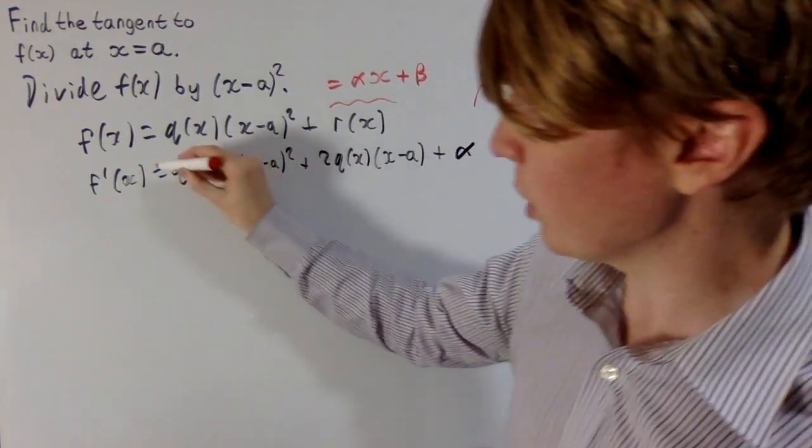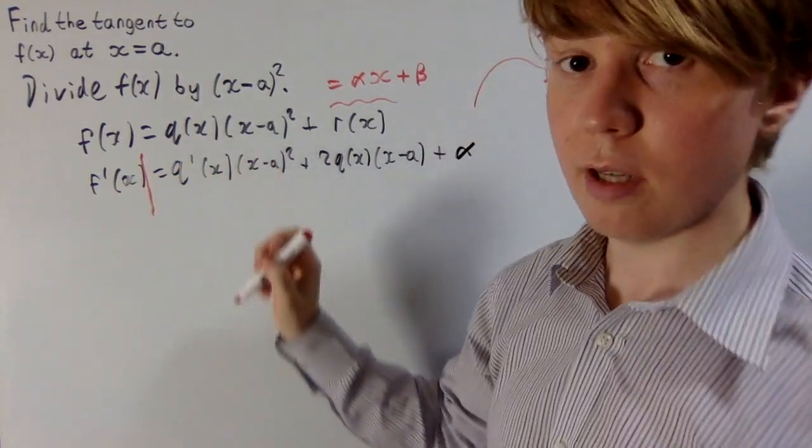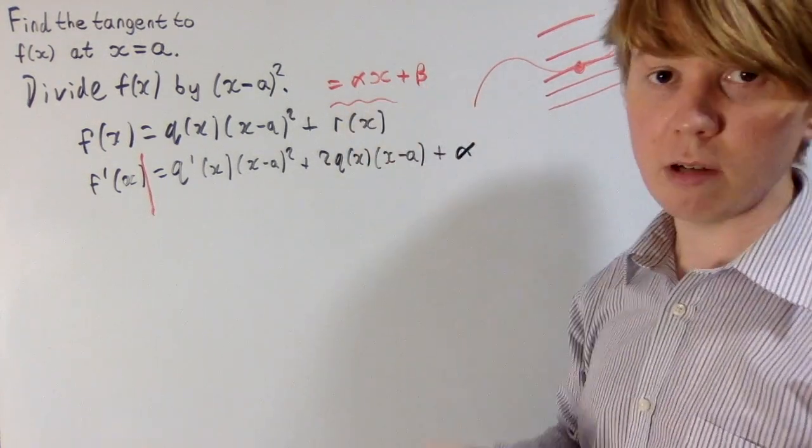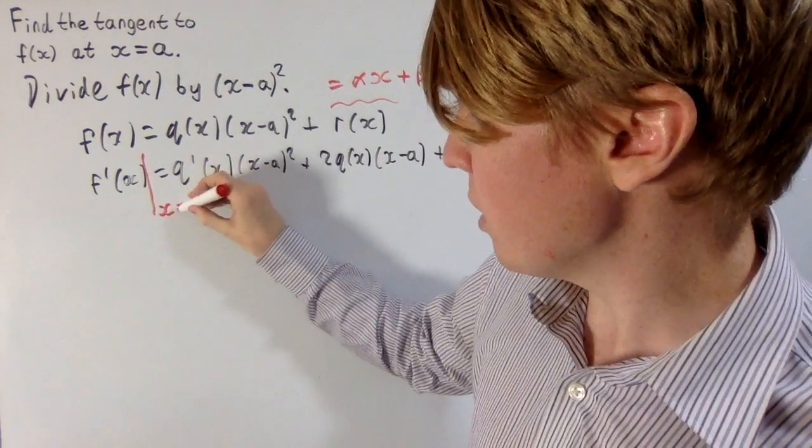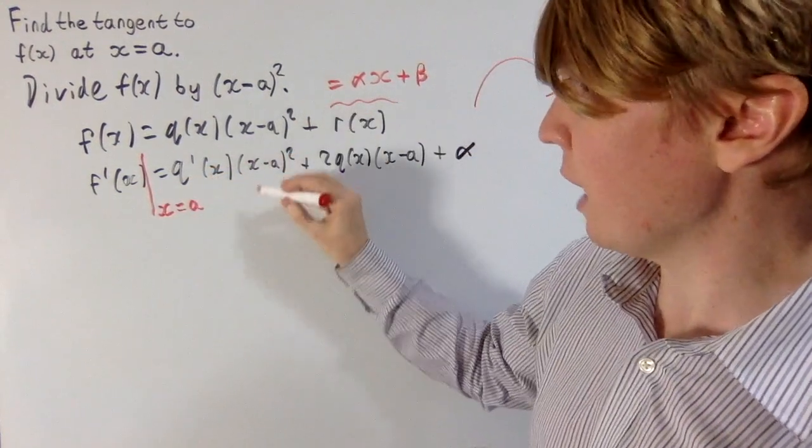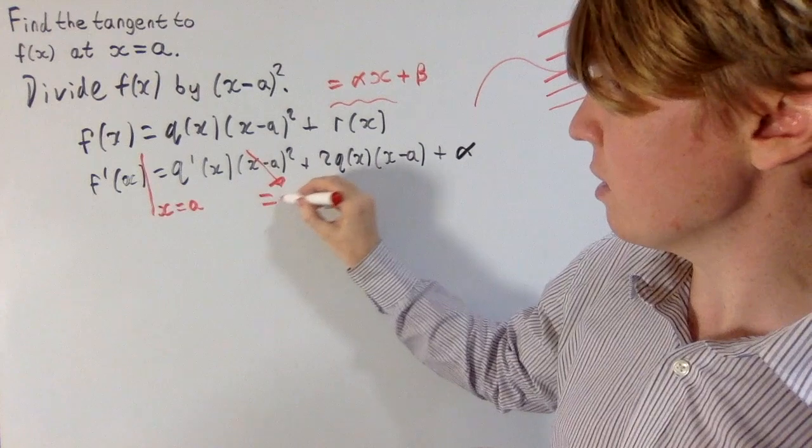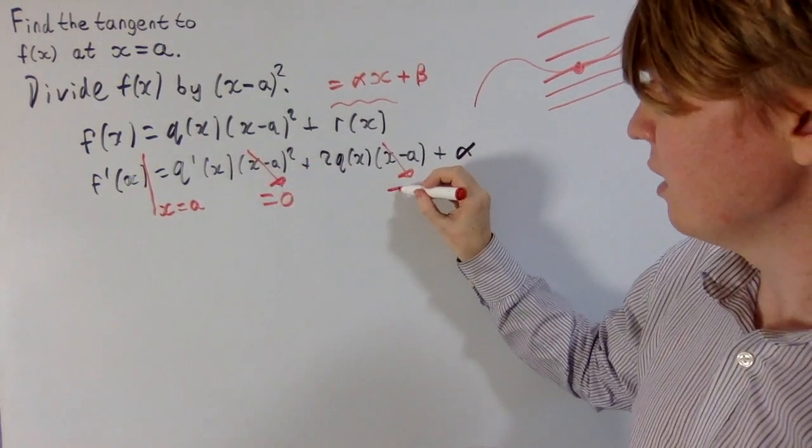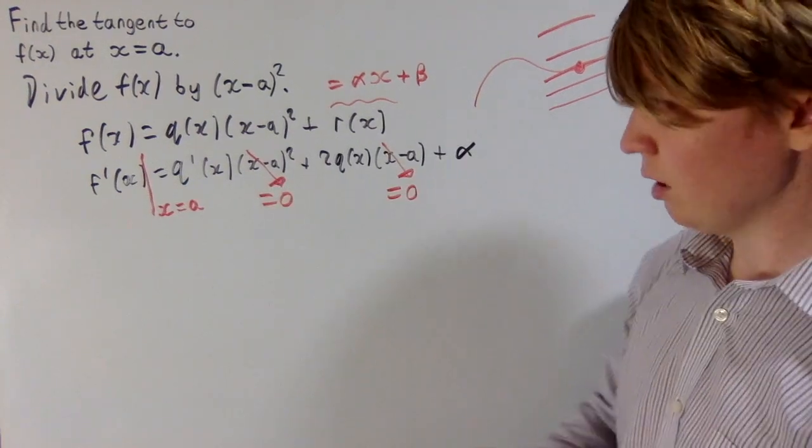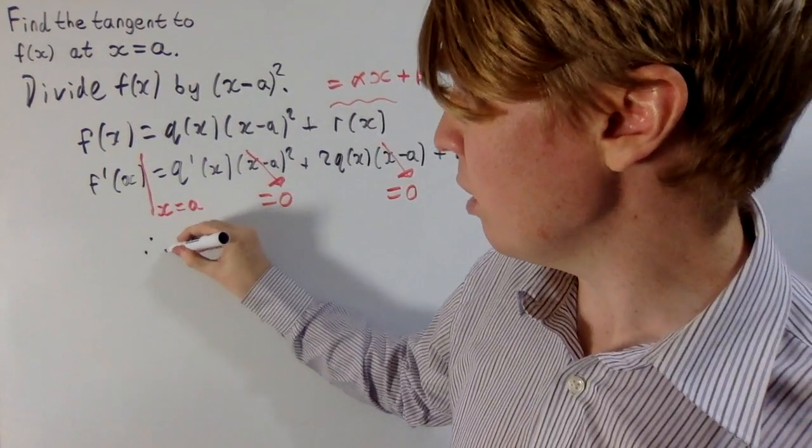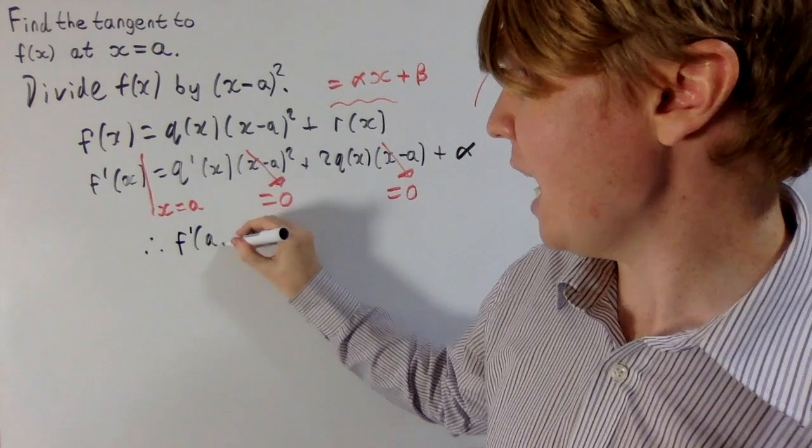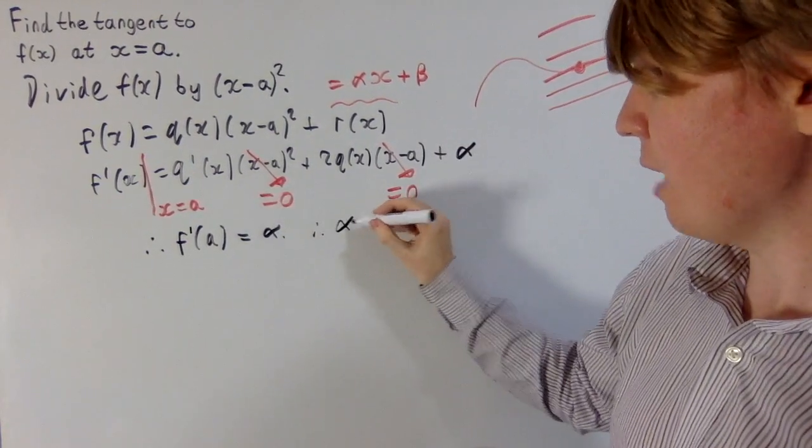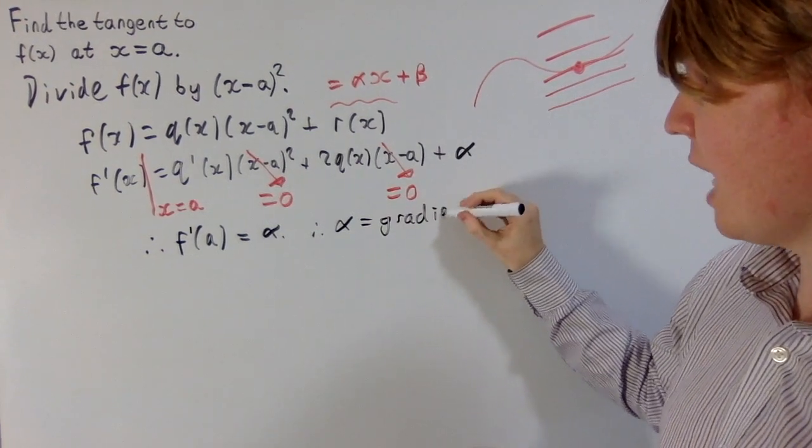And this is particularly nice now, because we're interested in the derivative at a, we want to make sure that alpha x plus beta gives us the equation of the tangent at a, so the derivative needs to be alpha when x equals a. You can see quite easily that this is the case, because x minus a squared, this is equal to 0, x minus a, this is also equal to 0 when x is a. So what do we conclude? Well, we conclude then that f dash of a is equal to alpha, and this tells us that alpha is the gradient of the tangent at a.